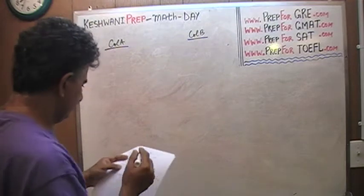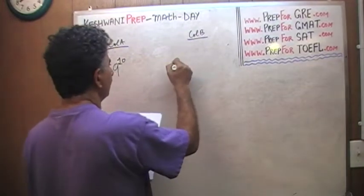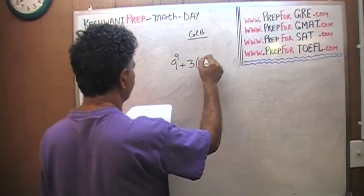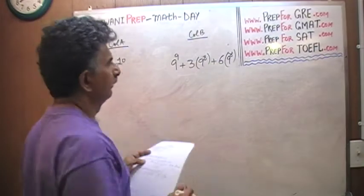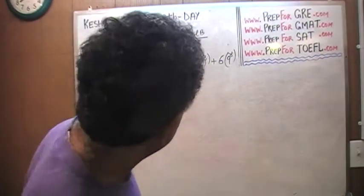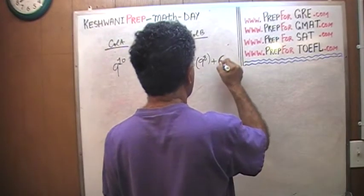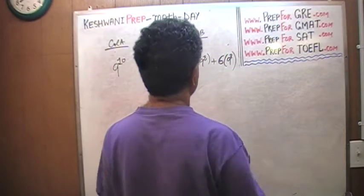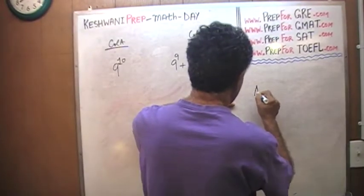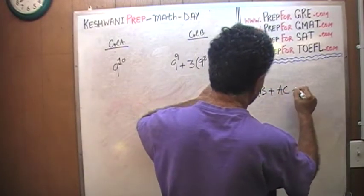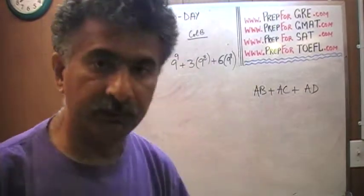Here we have a very similar problem. In column A: 9 raised to 10. In column B: 9 raised to 9 plus 3 times 9 raised to 8 plus 6 times 9 raised to 8. Now what we are dealing with here, because we have three terms, is something like: a times b plus a times c plus a times d. It's an expression, not an equation.